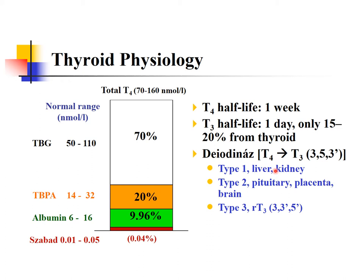In the liver, we have type one deiodinase making the active form. In the pituitary, placenta, and brain — organs with relatively hard basal metabolic demands — basal metabolism is going to be influenced by thyroid hormone levels.